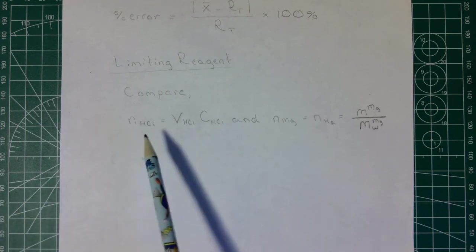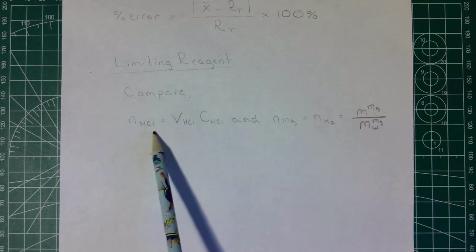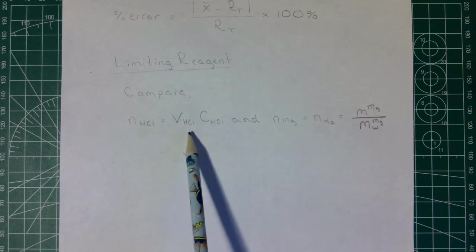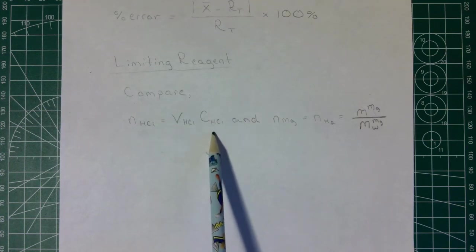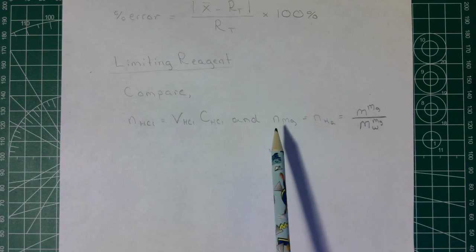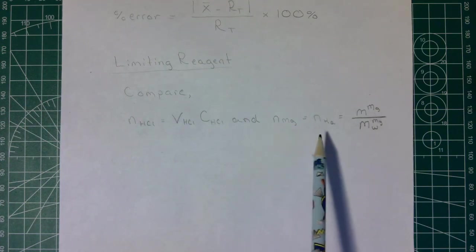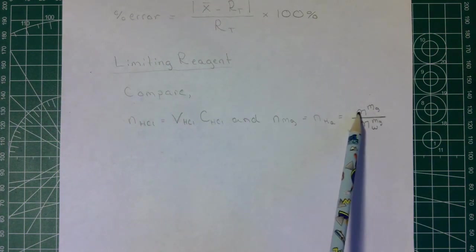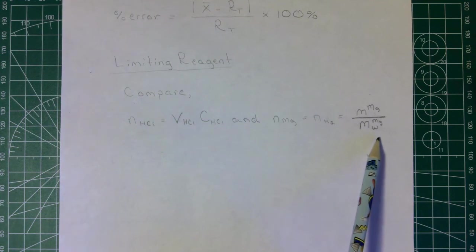So we will compare the number of moles of HCl by taking the volume of HCl given to us in the experimental PDF times its concentration, and then we will take a look at the moles of magnesium, which we already calculated as the moles of H2. And again, that was the mass of magnesium divided by the molecular weight of the magnesium.